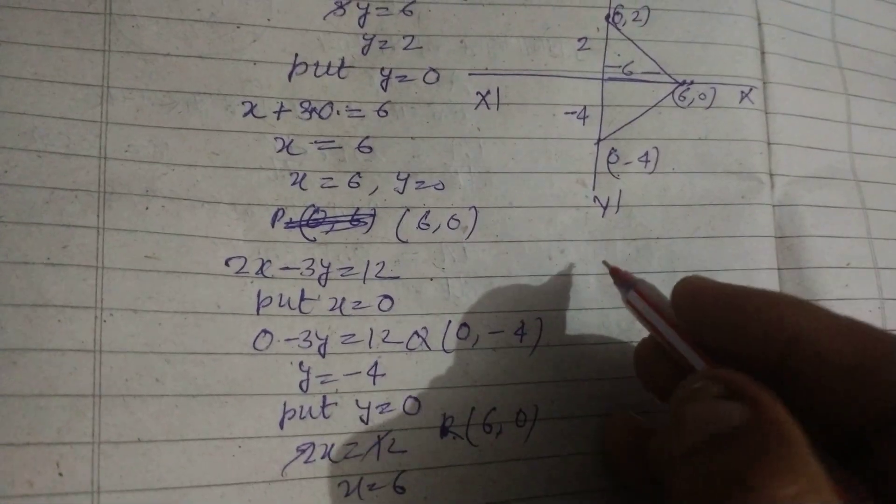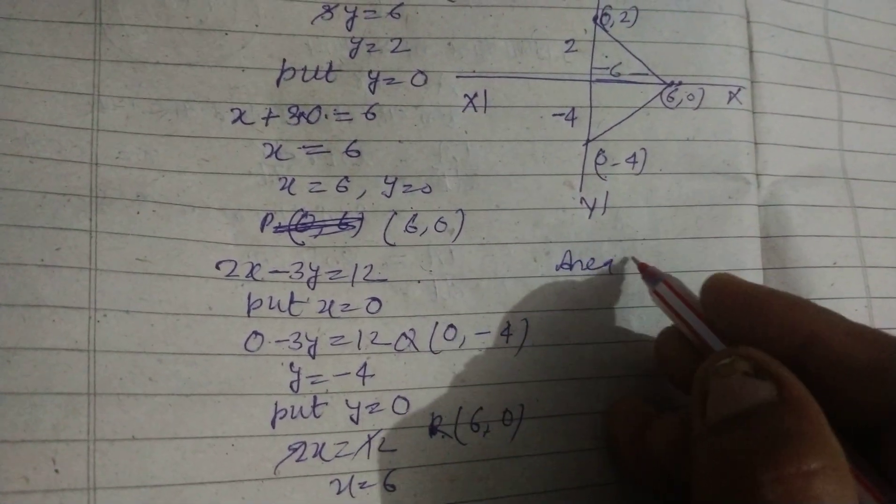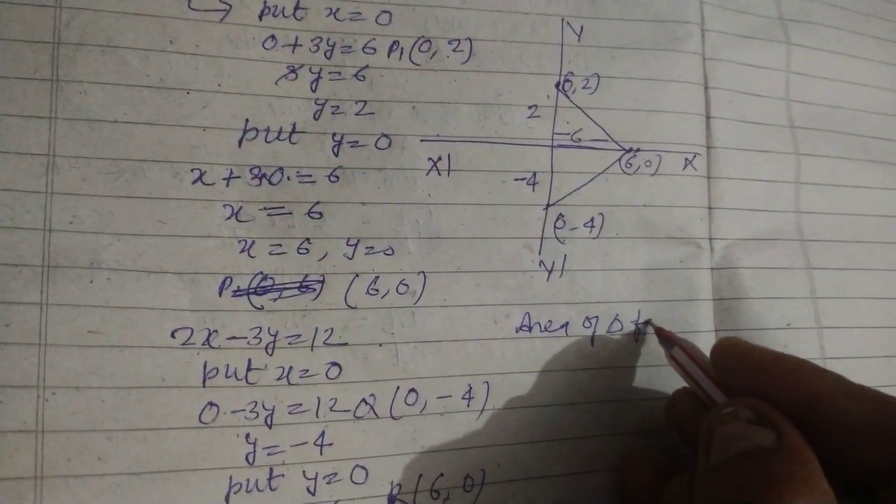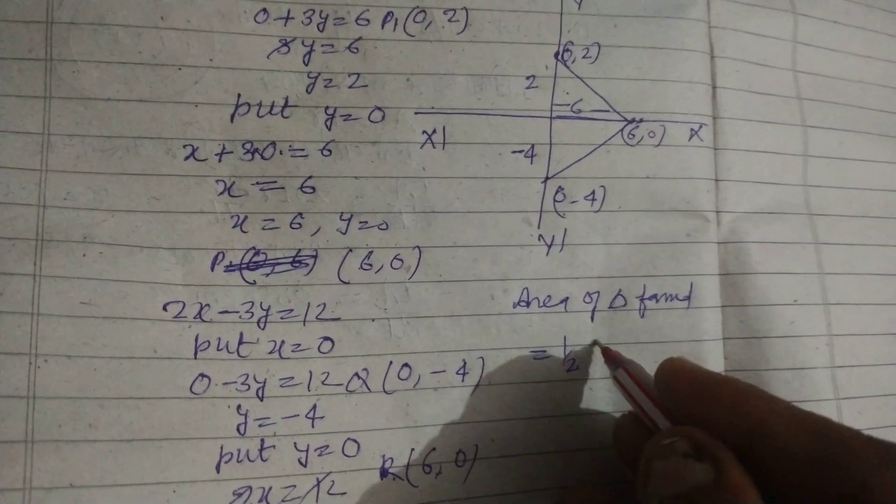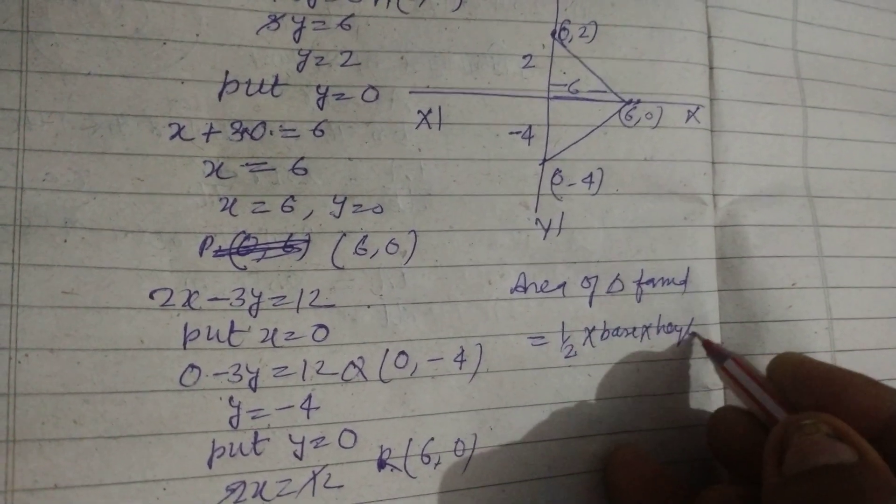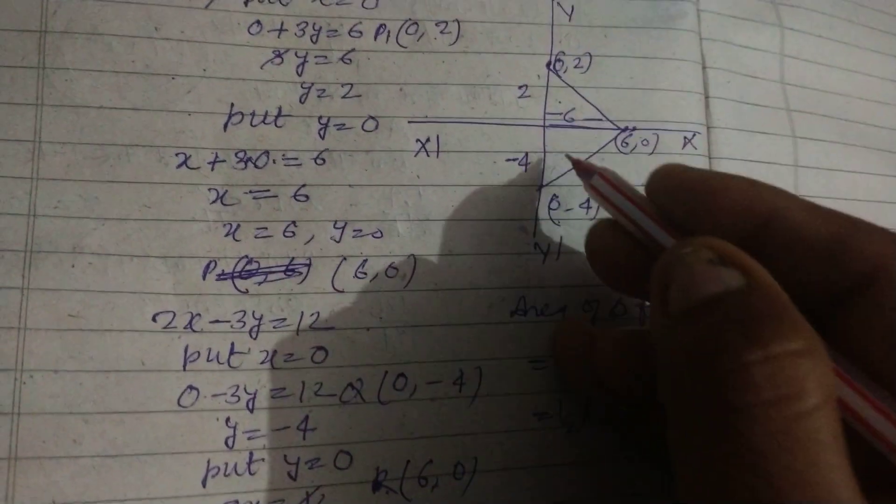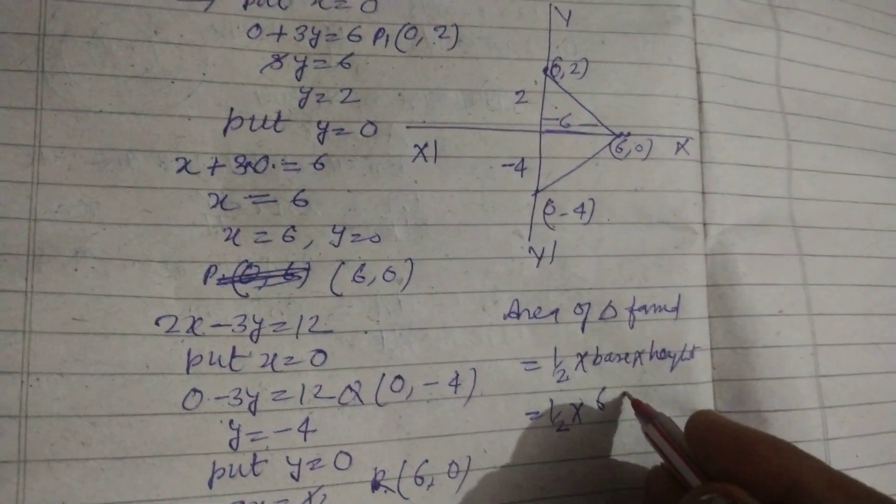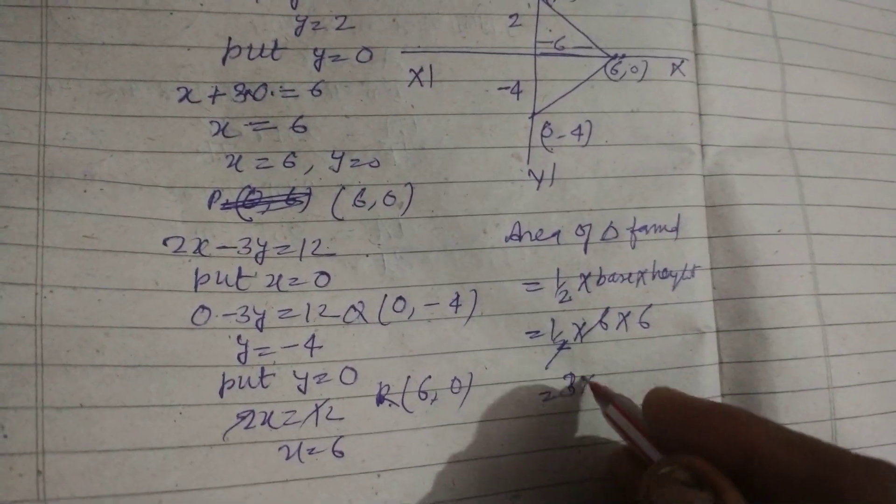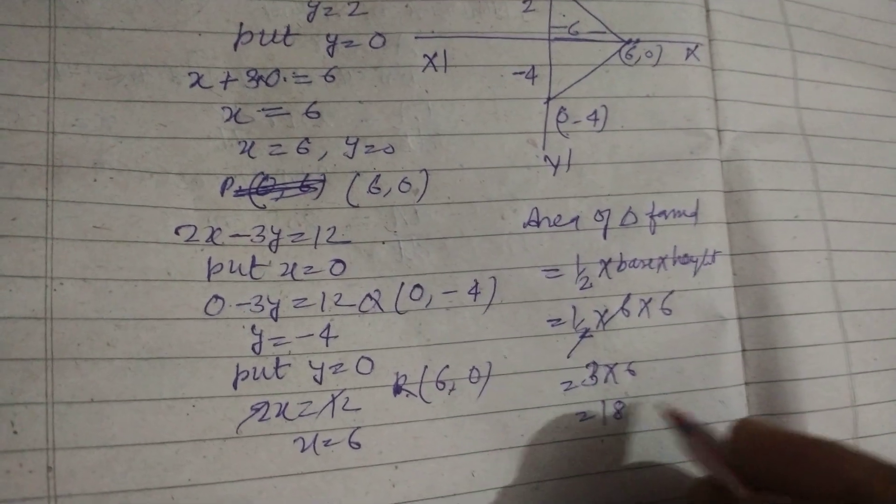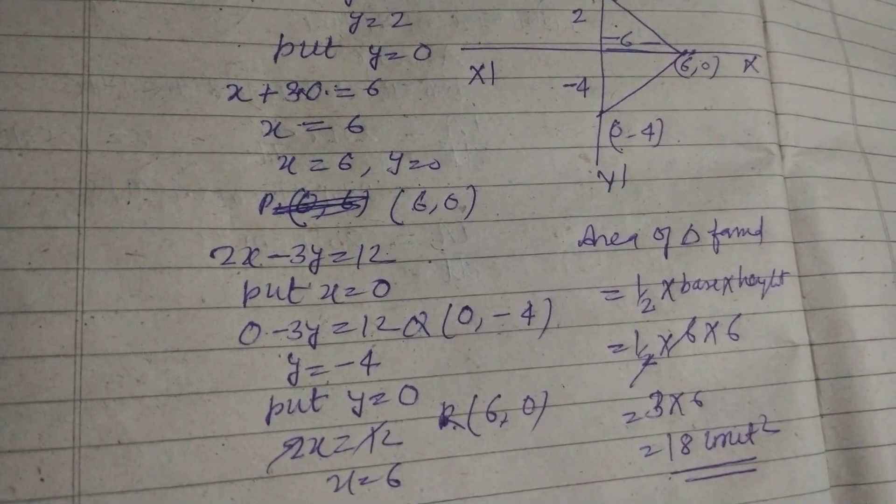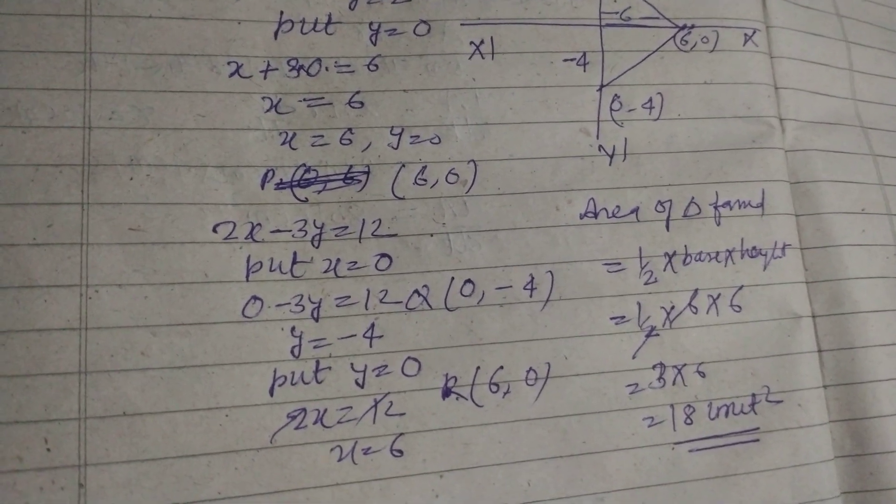So area of triangle formed equal to half base into height. That is half into 6 into 6, this is 18 unit square. So area of triangle formed is 18 unit square.